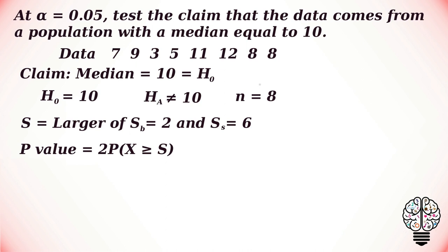This is 2 times the probability that a binomial random variable with p equals 0.5 and n equals 8 is greater than or equal to our S value, which is 6. We can also write this as 2 times 1 minus the probability X is less than or equal to 5. We always use p equal to 0.5, and in our case n equals 8 and k equals 5.